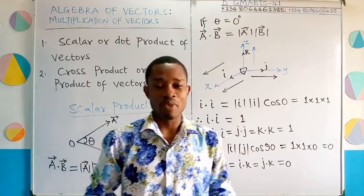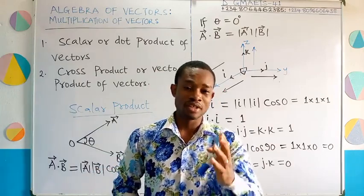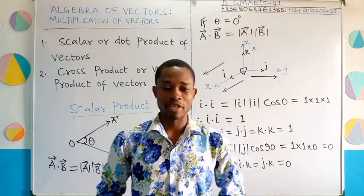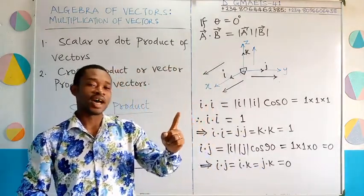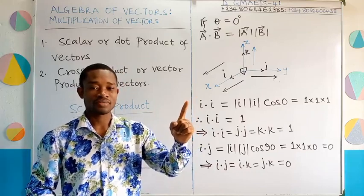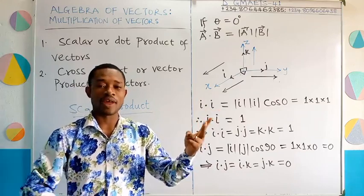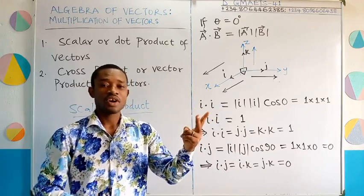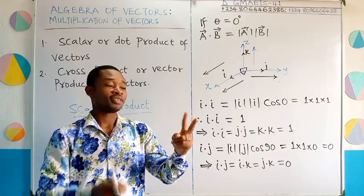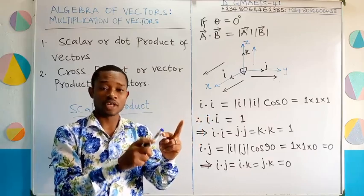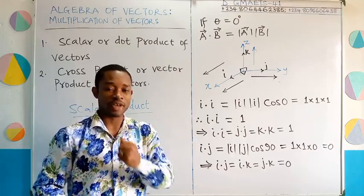When vectors are given to you to multiply, how do you go about it? We shall learn the two methods of multiplying vectors. One, we have the scalar product, also known as the dot product of vectors. And then another method is the cross or the vector product of vectors. So we have the scalar product, also known as the dot product, and then we have the vector product, also known as the cross product of vectors.